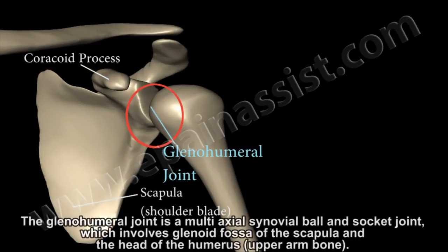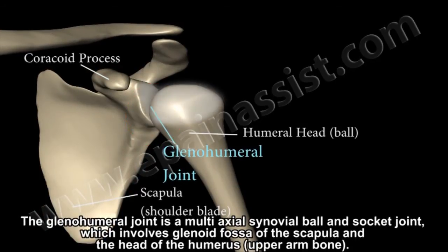The glenohumeral joint is a multi-axial synovial ball and socket joint which involves the glenoid fossa of the scapula and the head of the humerus.